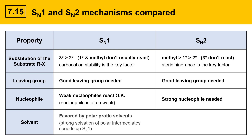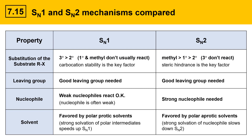Next we'll look at solvent. The SN1 reaction is favored by polar protic solvents. The reason for this is that strong solvation of the polar intermediates, the carbocation, speeds up the SN1 reaction because it stabilizes those intermediates. For SN2, strong solvation is a liability. SN2 reactions are favored by polar aprotic solvents because they solvate the nucleophile much more weakly, and strong solvation of the nucleophile slows down the SN2 reaction.